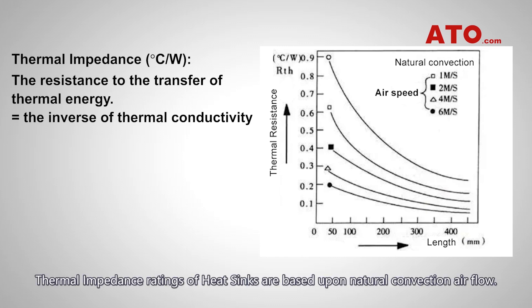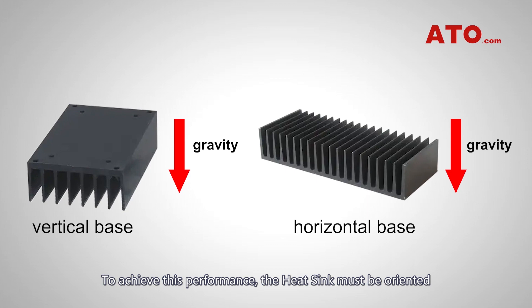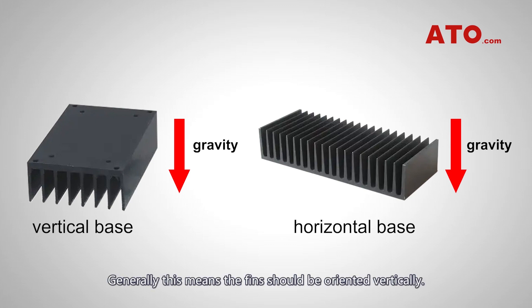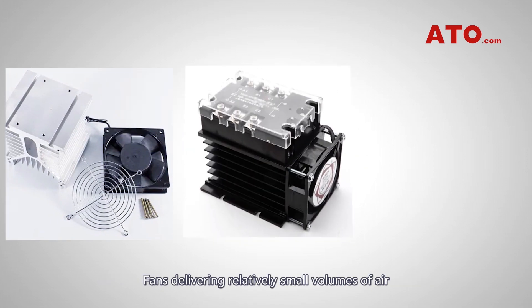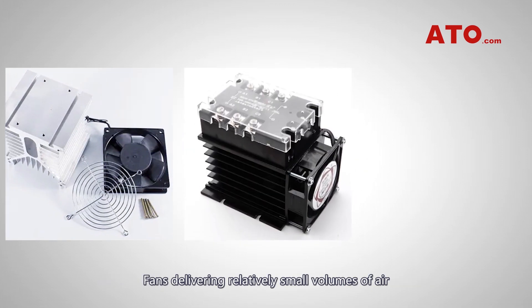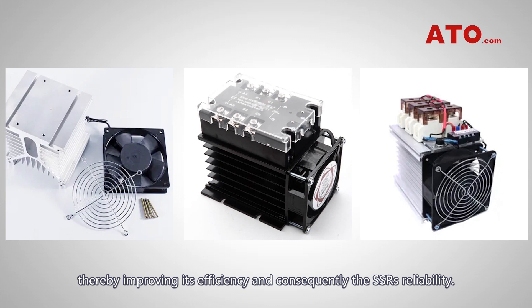Thermal impedance ratings of heat sinks are based upon natural convection airflow. To achieve its performance, the heat sink must be oriented such that airflow over its finned surface is maximized. Generally, this means the fins should be oriented vertically. Significant improvement in heat sink performance can be achieved by providing forced airflow over the heat sink surface area. Fans delivering relatively small volumes of air can reduce the heat sink's thermal impedance substantially, thereby improving its efficiency and consequently the SSR's reliability.